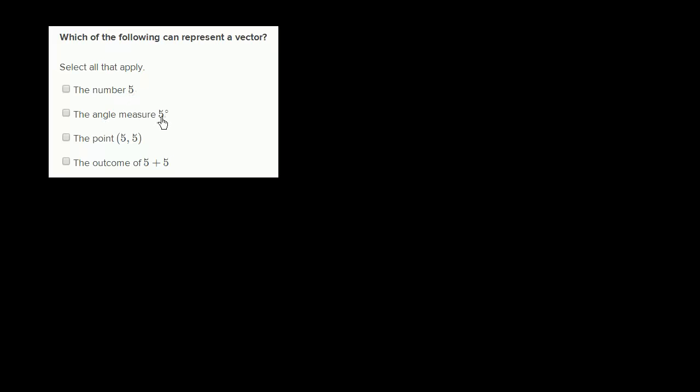The angle measure 5 degrees. Well, the angle measure 5 degrees could represent a direction. If you say it's 5 degrees, let's say that's the positive x-axis.